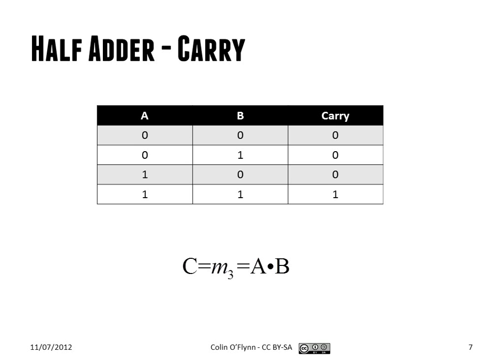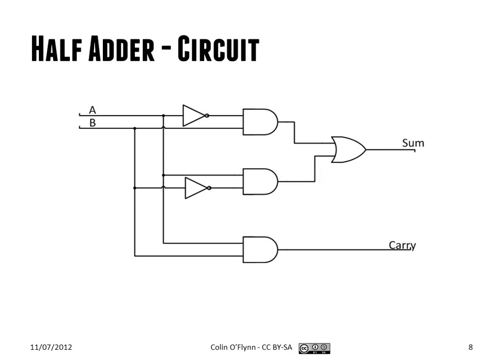The carry output, in a similar way, we can go through and derive the equation for it. In this example, the carry is only equal to one when A and B are both one, which in terms of the min term is just A and B — and we know that's basically just an AND gate.